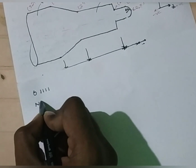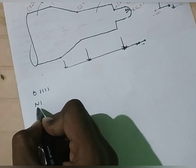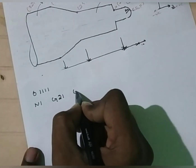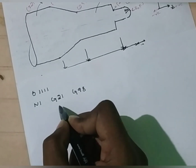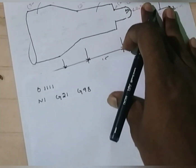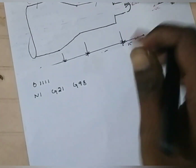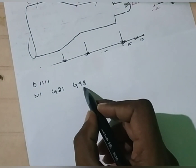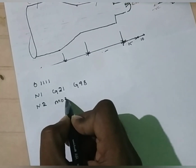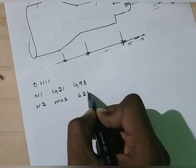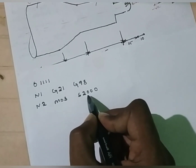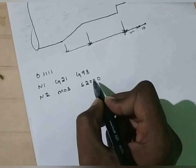Now, the first block, N1. N indicates block number — it does not have any function related to machining. N1: the first line is G21 and G98. G21 indicates all dimensions are in mm. You can see here, all the dimensions given in the geometry are in mm. G98, for turning, we are going to use G98. G98 is the feed rate in mm per revolution. The second block: M03 is 2000. M03 is spindle on. After switching on the spindle, we have to set the speed — let it be 2000 RPM.